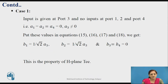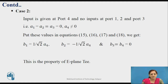Now consider different cases. Case 1: input is applied to port 3, with no input at ports 1, 2, and 4. Putting all these values into the above equations, you get B1 equal to B2 equal to 1 by root 2 times A3. This is the property of the H-plane T junction discussed in the previous slides. Case 2: input is applied to port 4 and the other ports are equal to 0. B1 and B2 have the same magnitude but are out of phase with each other — this is the property of the E-plane T junction.